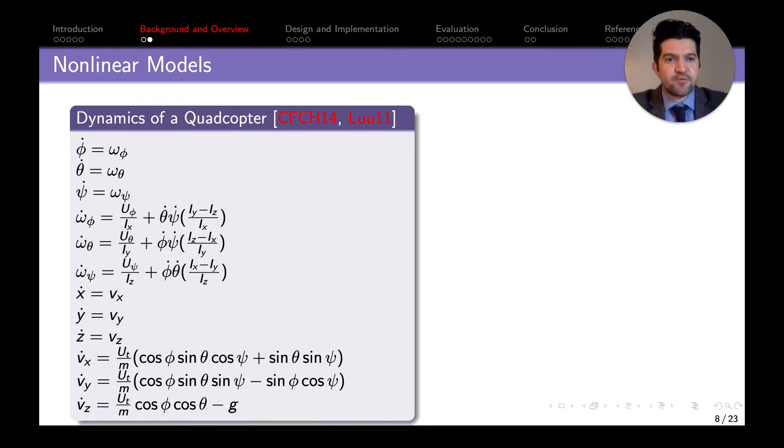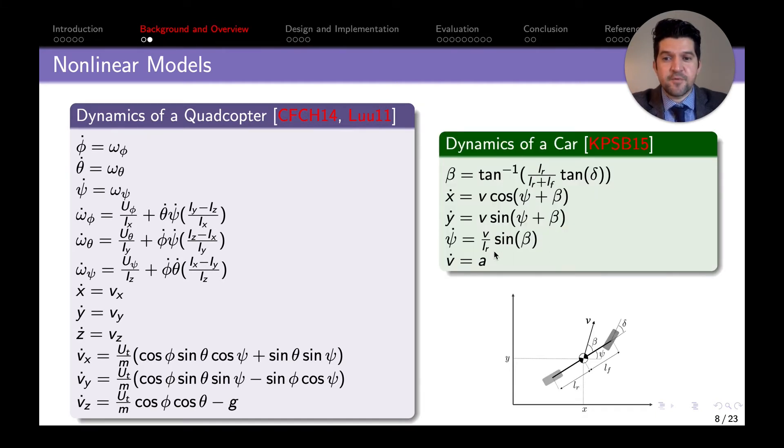When it comes to describing the behavior of these vehicles, we're using nonlinear models. As we can see here, these are the 12 differential equations for the dynamics of a quadcopter, and these are the equations for the ground vehicle. We're using nonlinear models because we already have the mathematical models that describe the system, just like we have models for how an apple falls. There's no need to implement machine learning since we have a good foundation of how these systems behave.